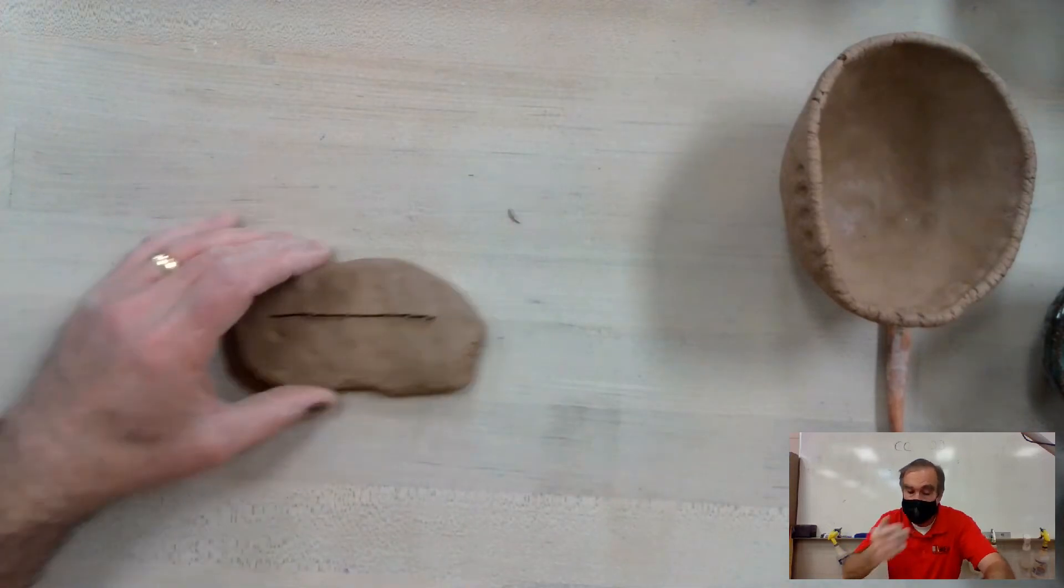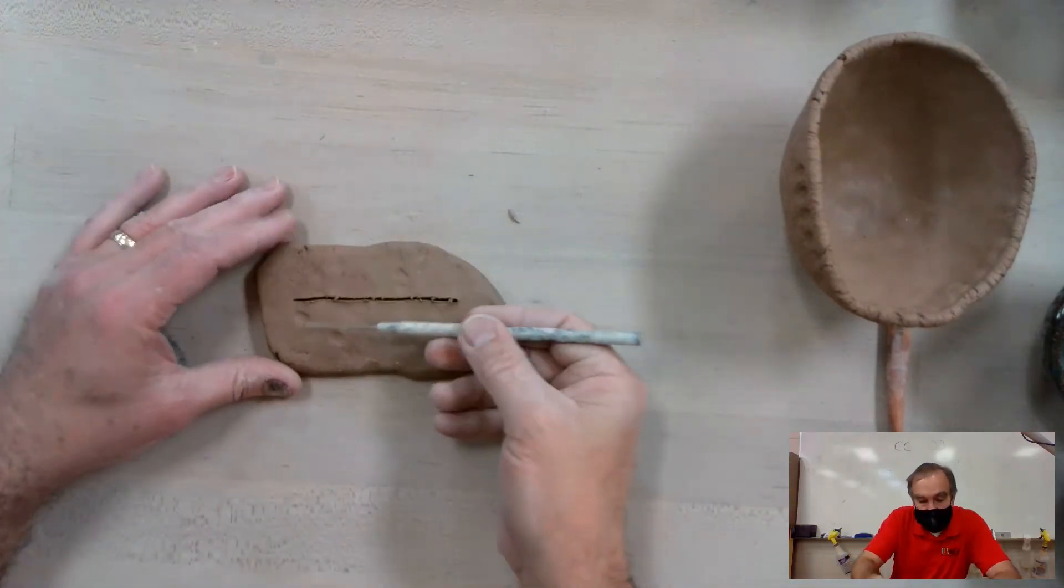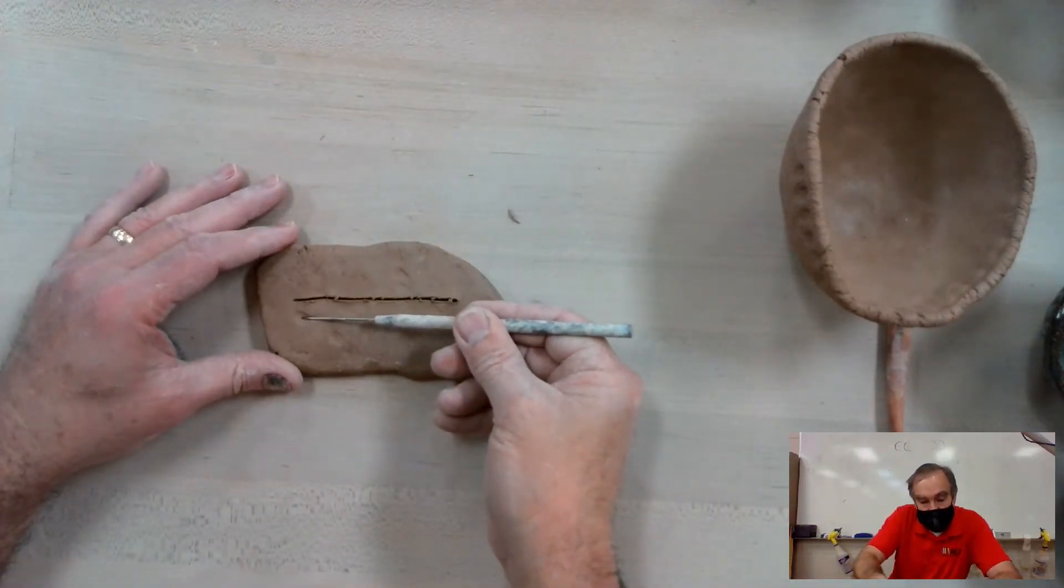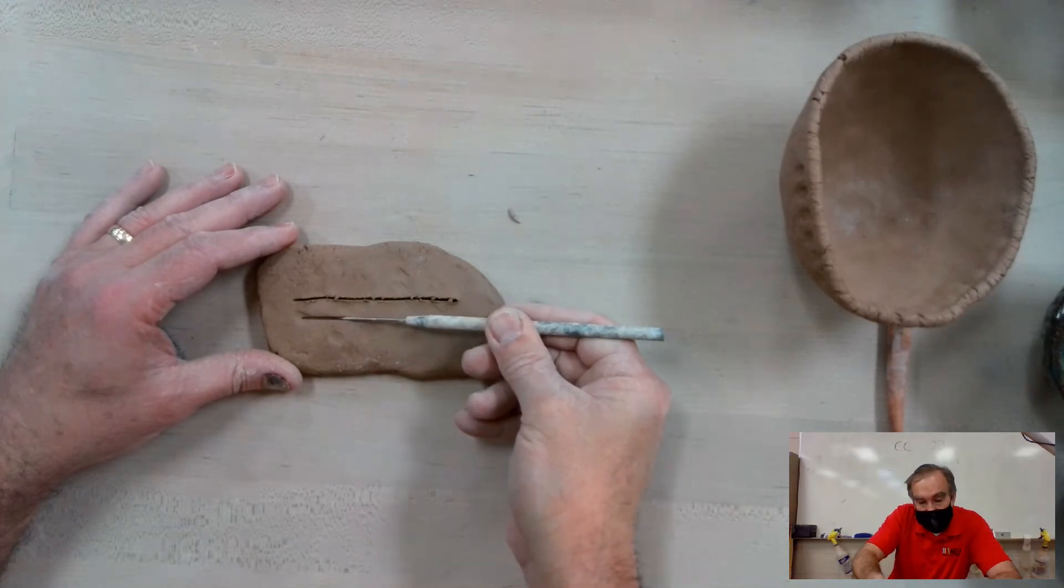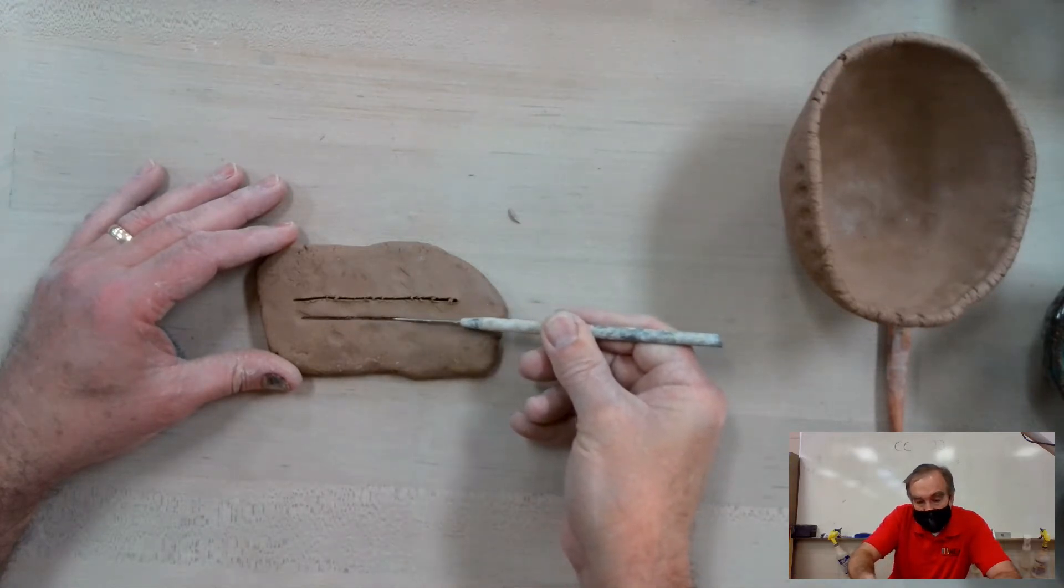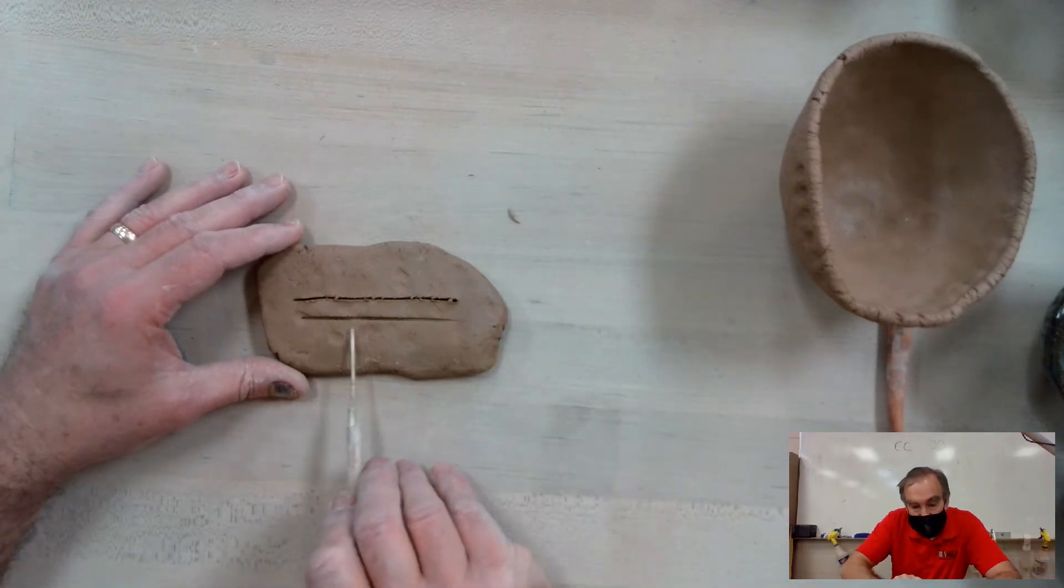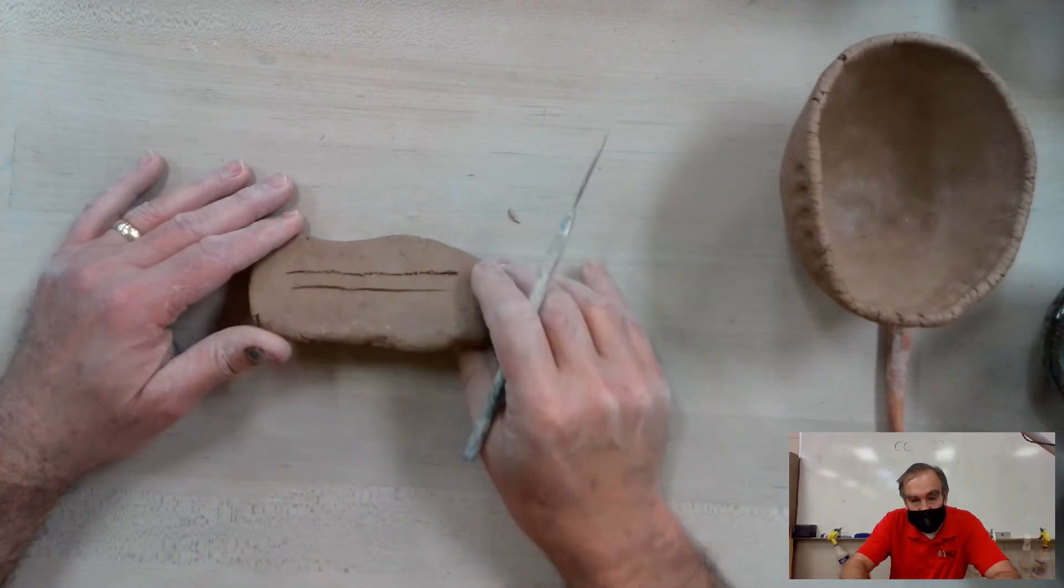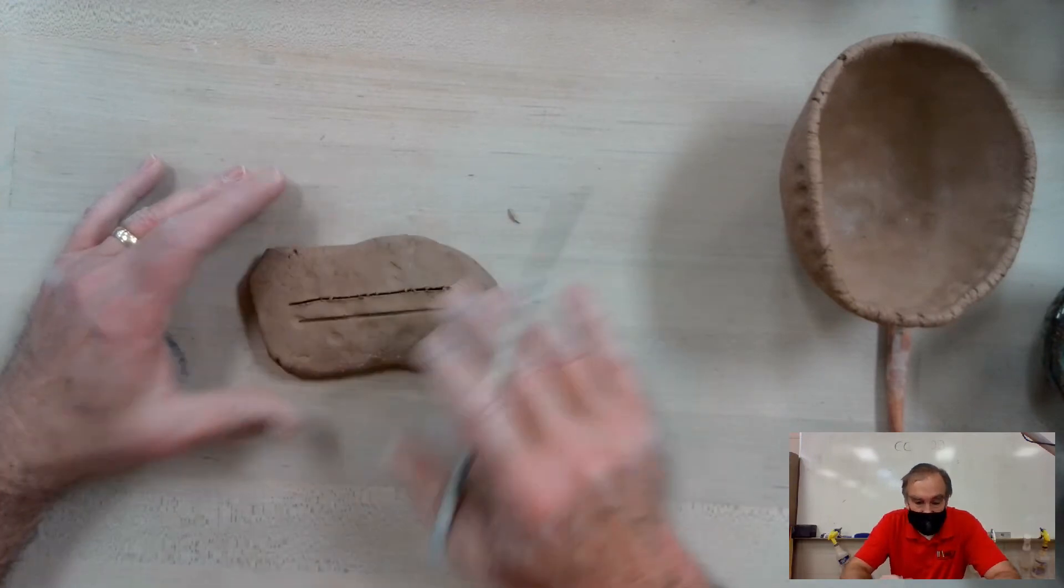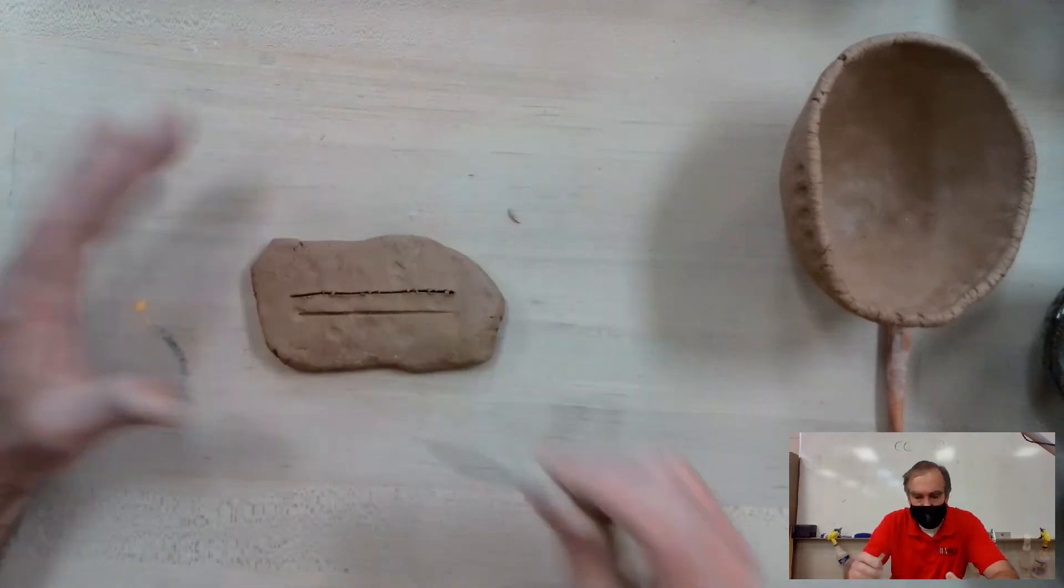Instead, we take the needle tool like this and kind of press it in as we go across, so we're not at that 90 degree angle. You'll notice the line here is much more smooth. We don't see those eruptions coming out of the clay.